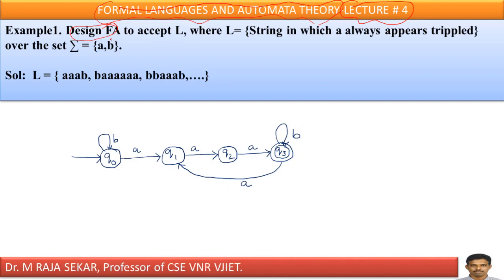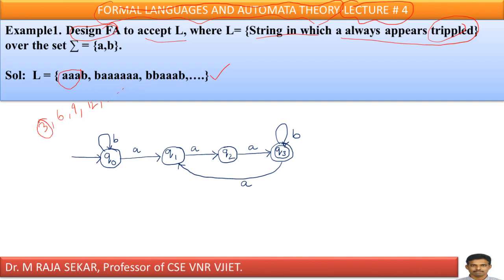Design a finite automaton to accept language L where the language consists of strings in which A always appears tripled, over the alphabet Σ = {A, B}. First, let us understand the language. What does 'tripled' mean? There may be 3 As, 6 As, 9 As, 12 As, and so on. This means there must be 3 consecutive As, or 6 consecutive As, or 9 consecutive As, and so on.